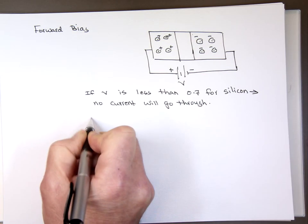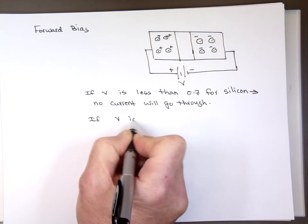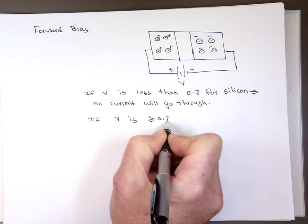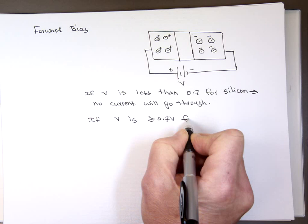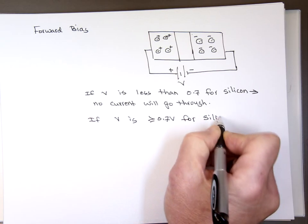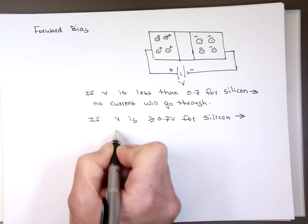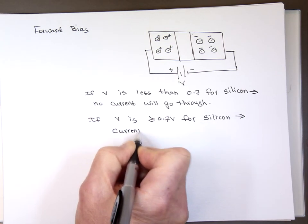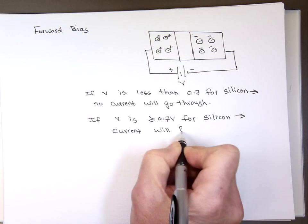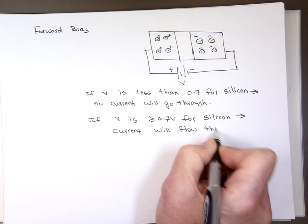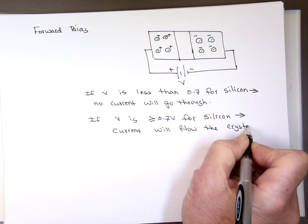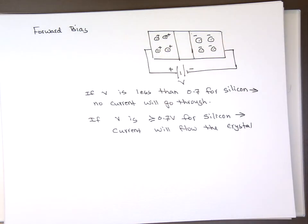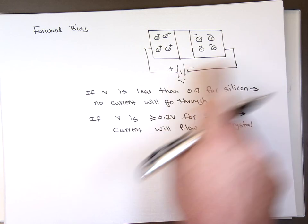But if that voltage is more than 0.7 volts, it's going to force these electrons to push across that depletion area. For germanium, we need roughly 0.3 volts. So if V is less than 0.7 volts for silicon, no current will go through — it's going to block it. And if V is greater than or equal to 0.7 volts, current will flow through the crystal. As long as this voltage is 0.7 or higher, current will keep going through it.